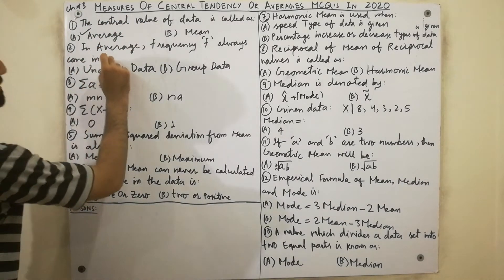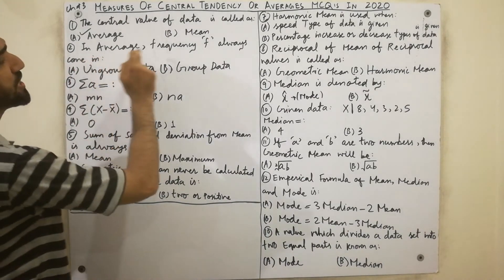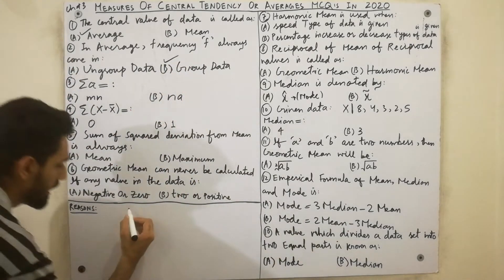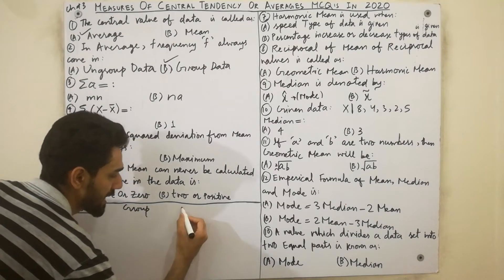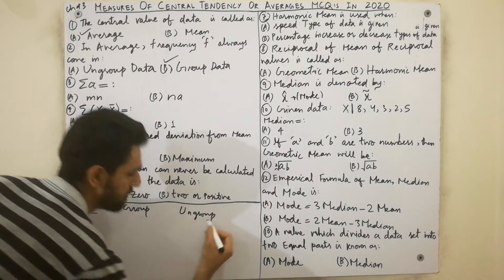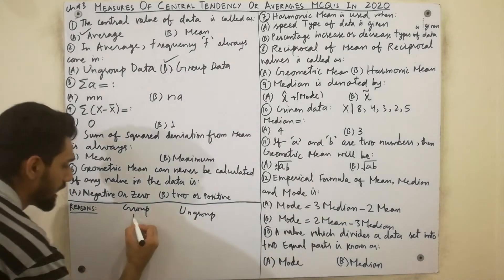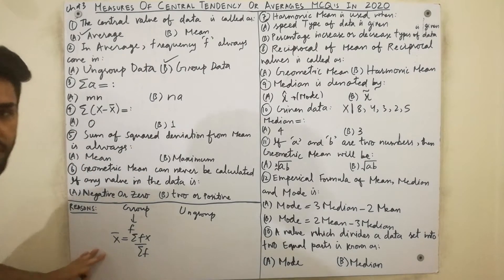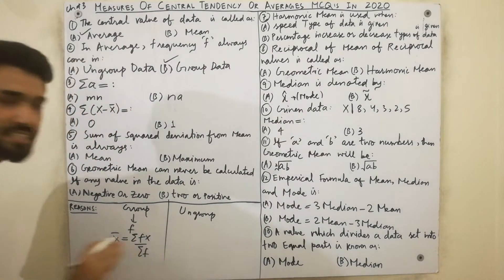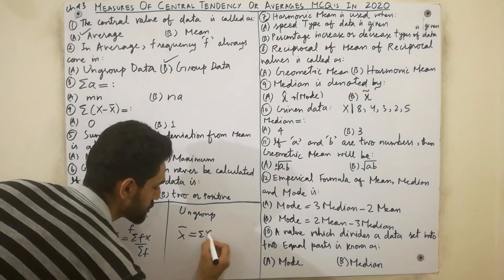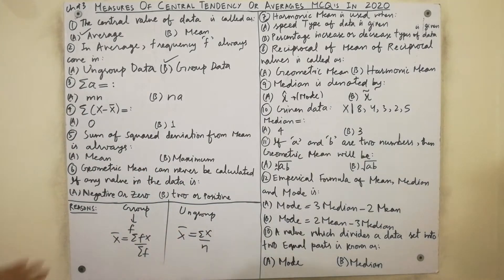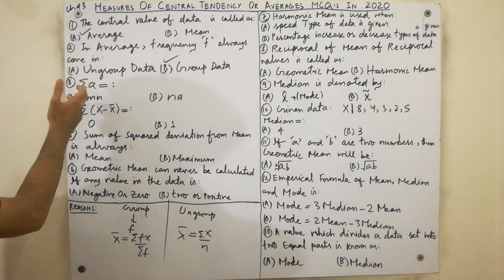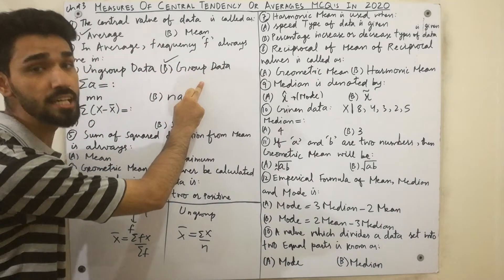The second MCQ: frequency always comes in grouped data. When you have grouped data, we already know the formula: x̄ = Σfx / Σf. But in ungrouped data, there is no frequency. The formula is x̄ = Σx / n. So frequency always comes in grouped data, but not in ungrouped data.